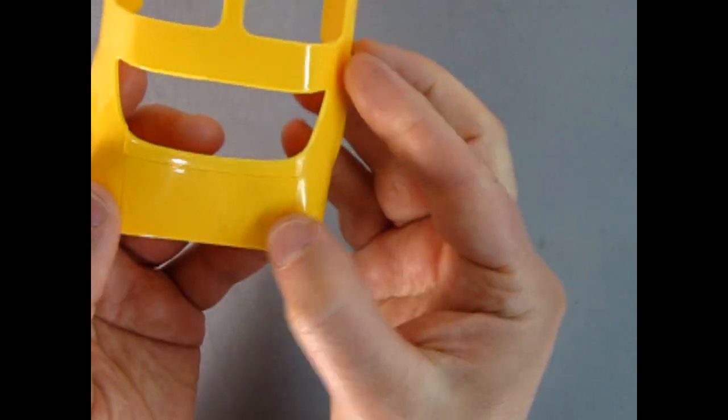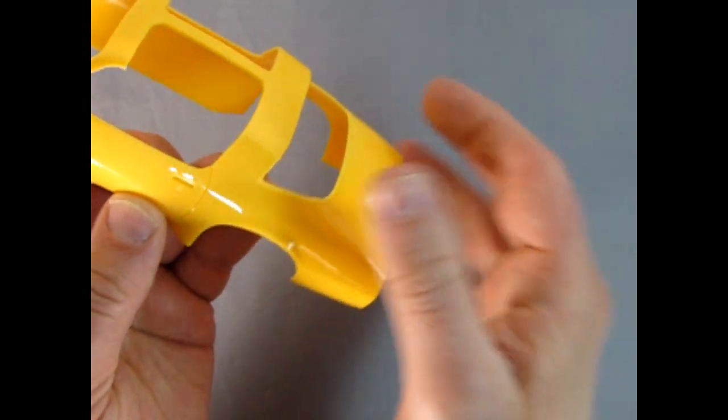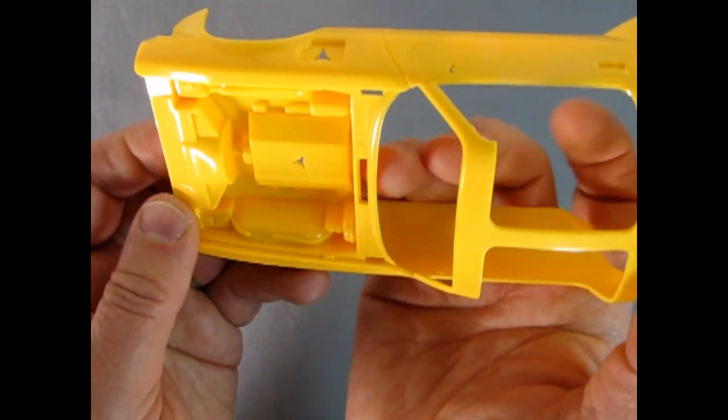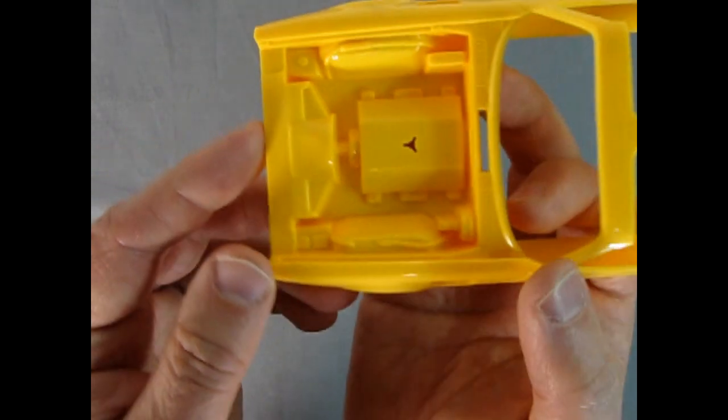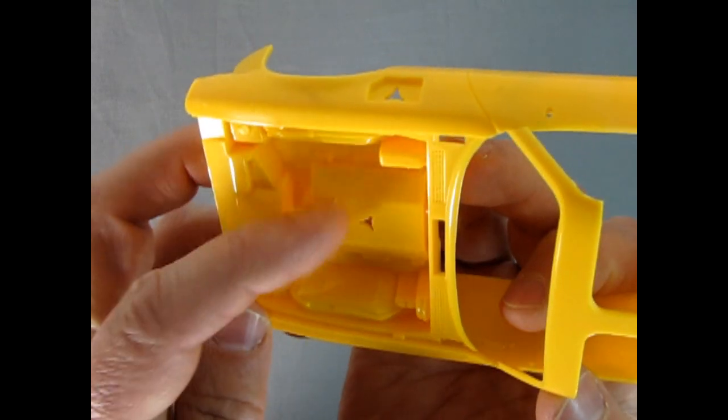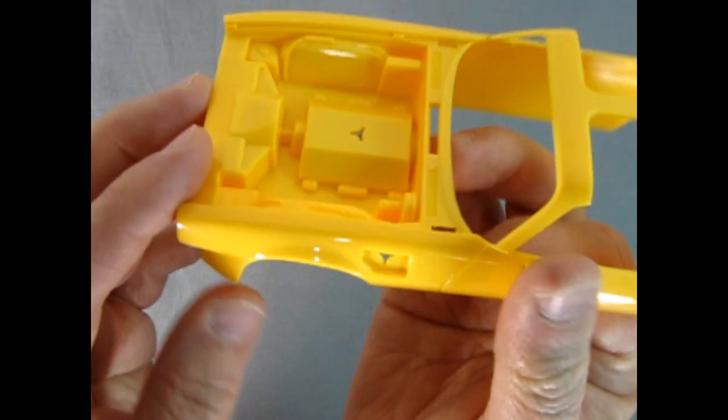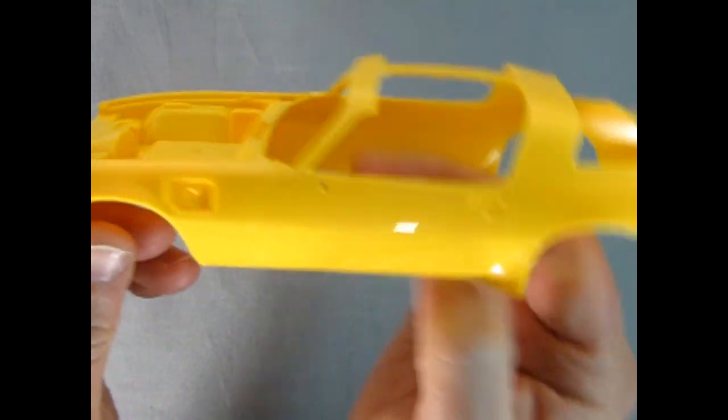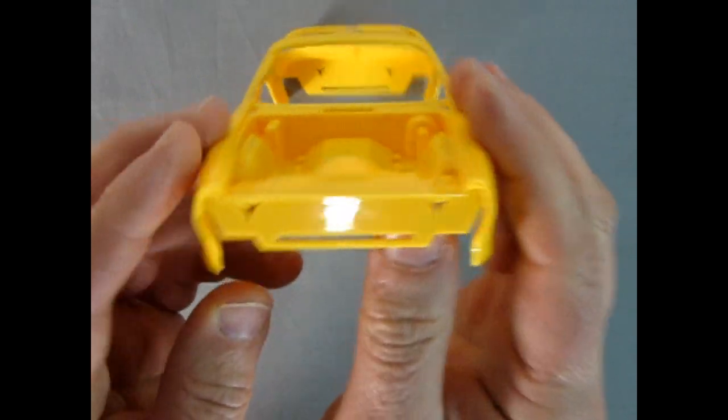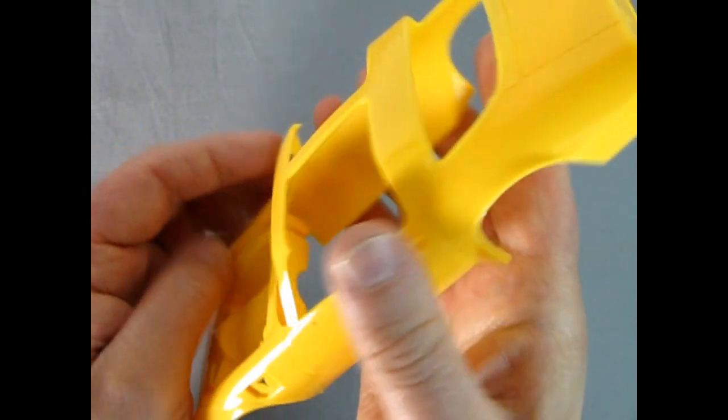There are some seam lines. So again, you could sand those out, but keep in mind if you sand this, you're going to lose that high gloss impact plastic. So if that's a problem to you, well, you're going to have to deal with seam lines. See underneath the hood, everything is molded in place, including the engine. All you need to do is snap it in the top. So if you're looking for a slot car, this could actually make a pretty good body for that as well, since everything's right up front.